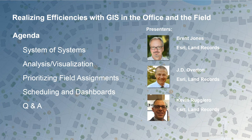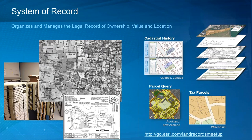A system of record is used to efficiently record, securely manage, and accurately report your data. This can be property characteristics, tax parcels, and values. ArcGIS manages the record of ownership, the value, and location. In many jurisdictions, all these responsibilities fall under the assessor. For those attending the Land Records Meetup, you are the folks that maintain the system of record in the parcel fabric.